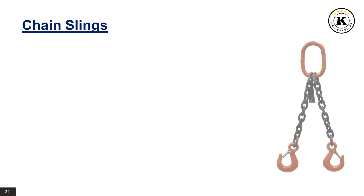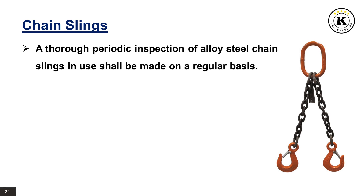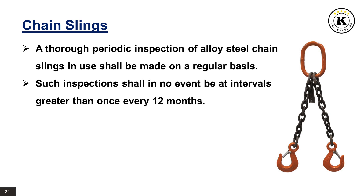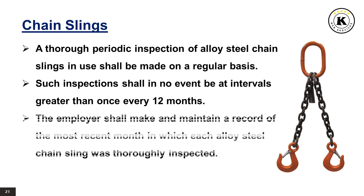A thorough periodic inspection of alloy steel chain slings in use shall be made on a regular basis. Such inspections shall in no event be at intervals greater than once every 12 months. The employer shall make and maintain a record of the most recent month in which each alloy steel chain sling was thoroughly inspected.